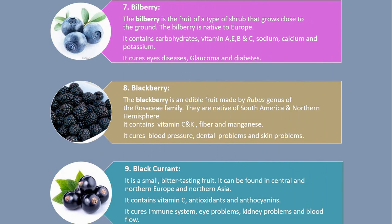Number 7. Bilberry. The bilberry is the fruit of a type of shrub that grows close to the ground. The bilberry is native to Europe. It contains carbohydrates, vitamin A, E, B and C, sodium, calcium and potassium. It cures eye diseases, glaucoma and diabetes.